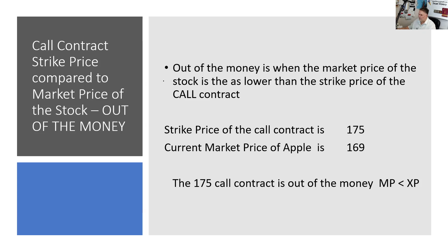Looking at an Apple 175 call contract: if Apple's at 169, we can use our framing question—it's not likely somebody wants to call it away at 175 when the stock's at 169. We can use call up—the market price is not up. There's no such thing as negative intrinsic value; we just say this contract is out of the money. If this is at expiration and Apple at expiration is 169 on a 175 call, it's going to expire worthless. You need to be able to intuit that based on where the market price is at expiration.